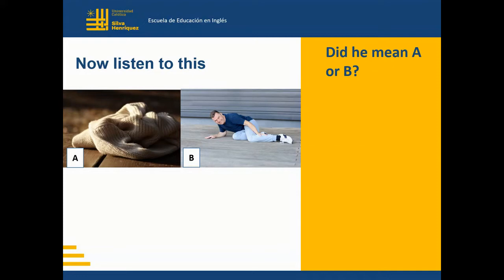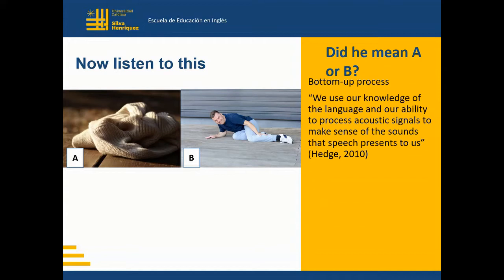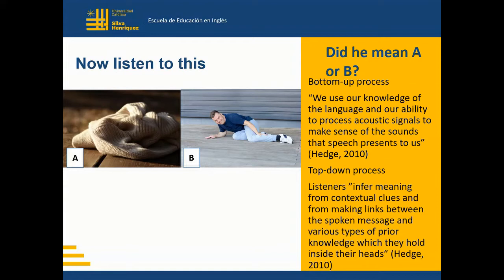Bottom-up processing is in charge of decoding linguistic features thanks to people's knowledge of phonological, lexical, and syntactic parts of the language, among others. In our reading video, we learned that this was called systemic knowledge. Top-down processing is the one where listeners' prior knowledge of the world is crucial. In our reading video, we learned that this was called schematic knowledge.